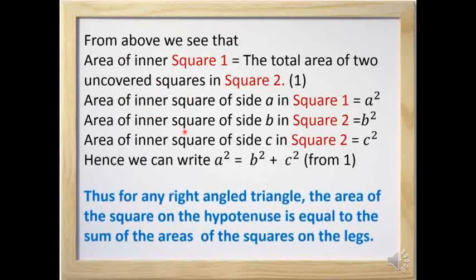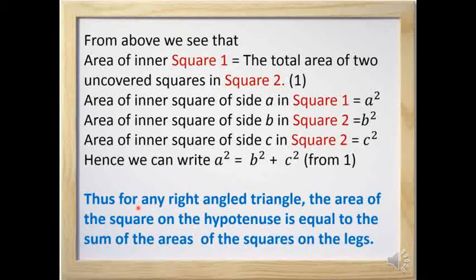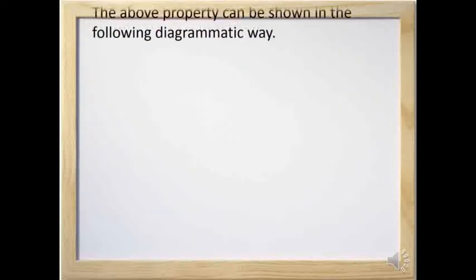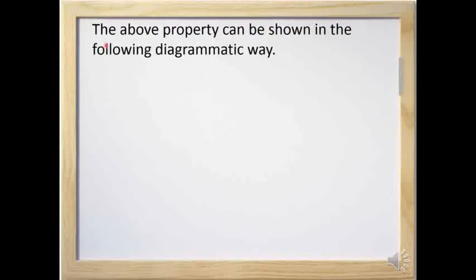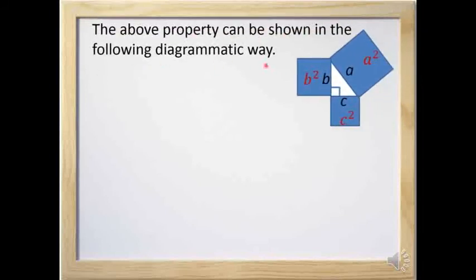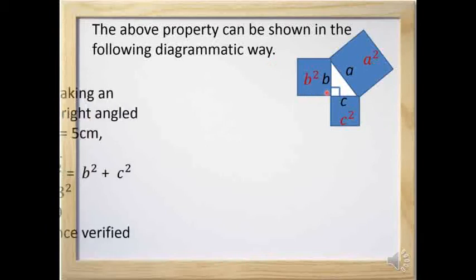From this we can understand: for any right angle triangle, the area of the square on the hypotenuse is equal to the sum of the areas of the squares on the legs. This property can also be shown in the following diagrammatic way, as you can see here.